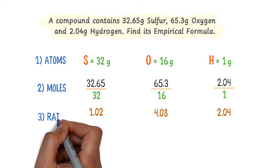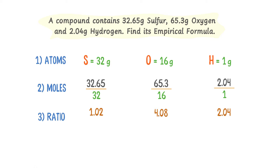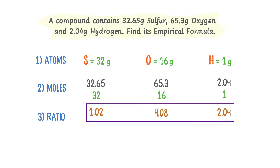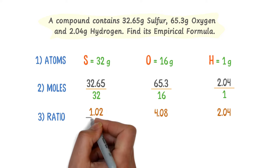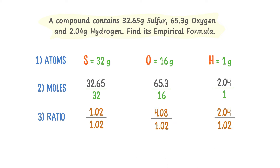Thirdly, I will find the simplest whole number ratio. To find it, I divide all three numbers by the smallest number among them. We can see that the smallest number is 1.02, so I divide all three numbers by 1.02.